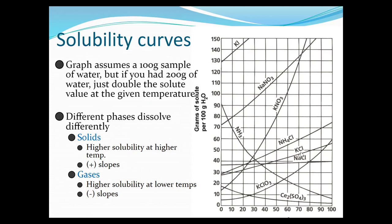Looking at potassium chloride at 60 degrees, it's almost halfway between the 40 and 50 mark — let's say 45 grams will dissolve in 100 grams of water. Now, what if you have 200 grams of water? You just double the 45 grams. If 45 grams dissolve in 100 grams of water, then 90 grams should dissolve in 200 grams of water. That's how you look at it.